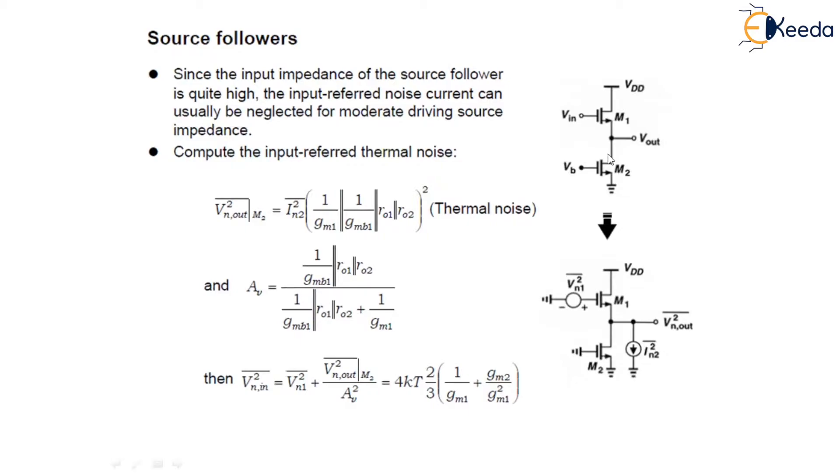Here in the figure, it is shown that M2 serves as the bias current source.